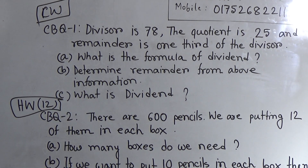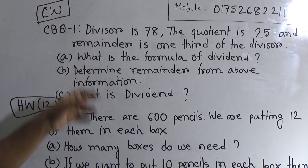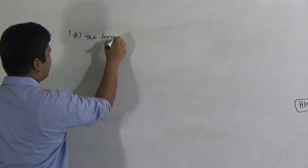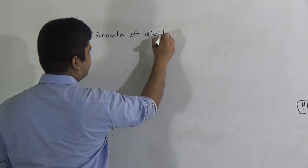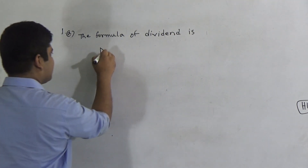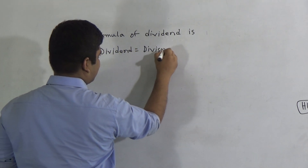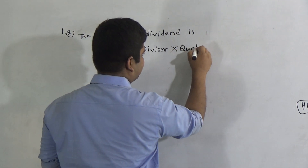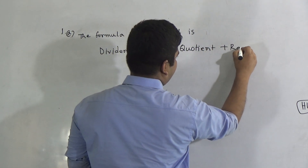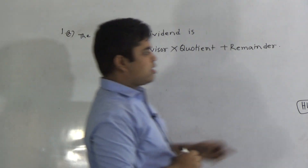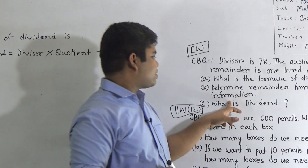So we solve this question. Part A: What is the formula of dividend? We write the formula of dividend. We know that: Dividend = Divisor × Quotient + Remainder.